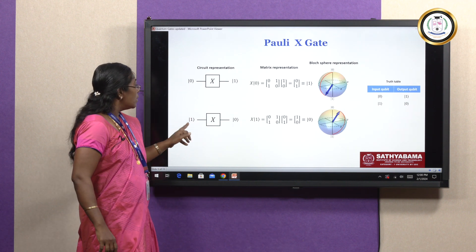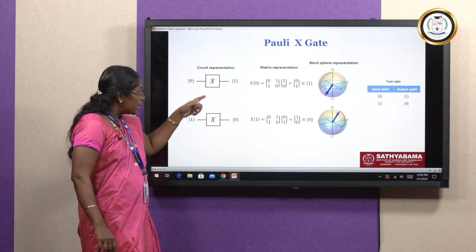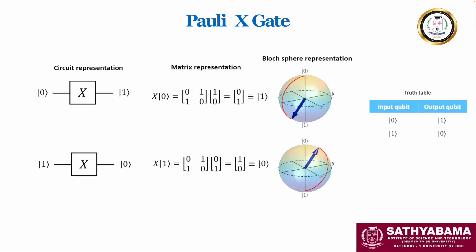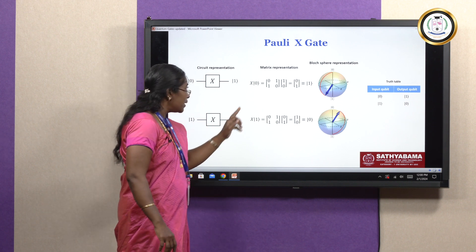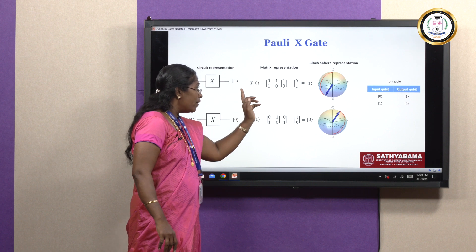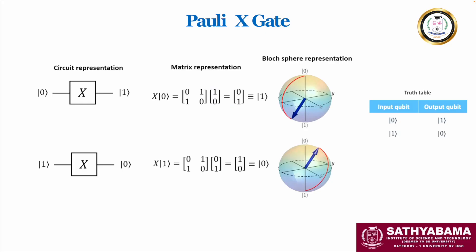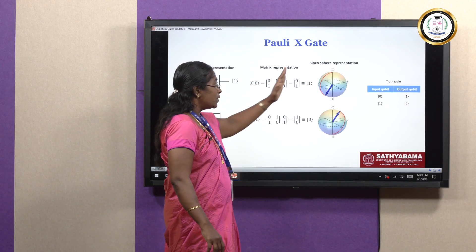For example, when you pass |1⟩ ket through the Pauli X gate, you get the output |0⟩ ket. In matrix form, the Pauli X gate is represented as [[0, 1], [1, 0]]. Applying it to |0⟩ gives |1⟩ qubit. The Pauli X gate is also represented using the Bloch sphere representation.